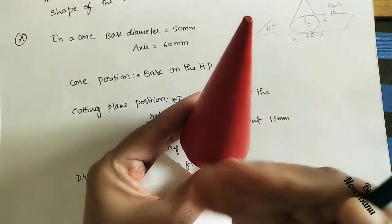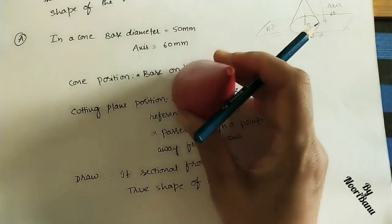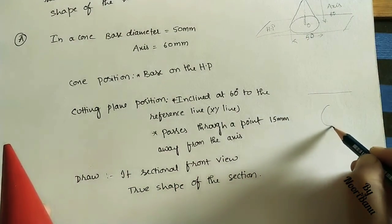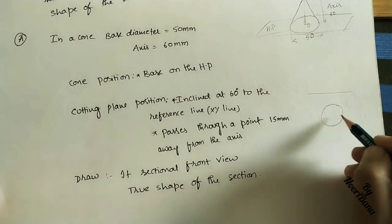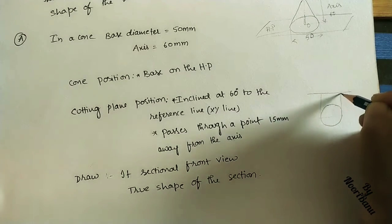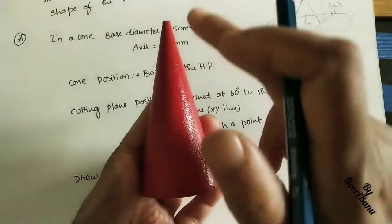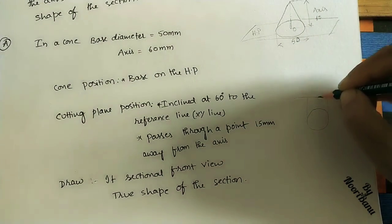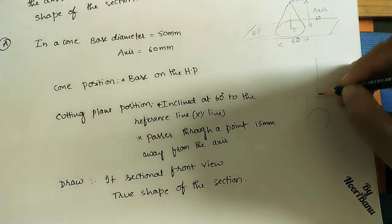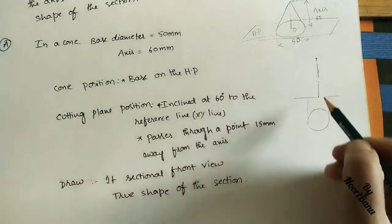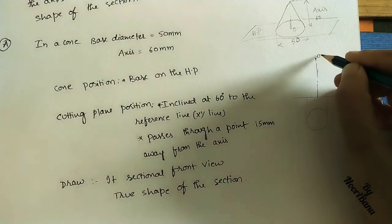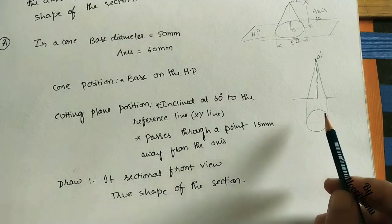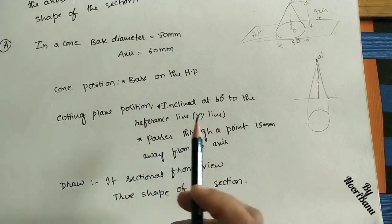We need to find the sectional front view and the true shape of the section. Initially, we will do the projections of the solid. From the top, we can see the circle — the diameter is 50 mm. In the front view we can see the entire height, which looks like a triangle. The height is 60 mm, so on the axis line take 60 mm and join the ends to the apex, marked O1 dash.